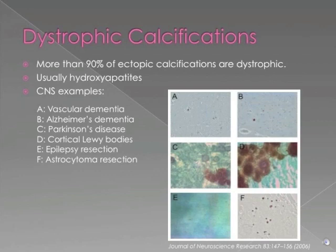Dystrophic calcifications account for more than 90% of the ectopic calcifications that we encounter. Usually calcium in dystrophic calcifications takes the form of hydroxyapatites, which is the same form found in bone. Some examples from the adult brain include cases of vascular dementia, Parkinson's disease, epilepsy, and brain tumors such as astrocytomas. These are post-mortem samples demonstrating calcium staining in the human brain.